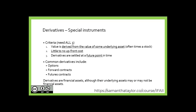Its value must be derived from the value of some underlying asset, oftentimes a stock, require little to no upfront cost, and be settled at a time in the future. The common derivatives that we are going to be looking at for this chapter are options, forward contracts, and futures contracts.